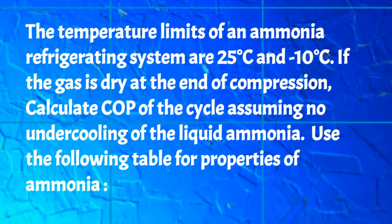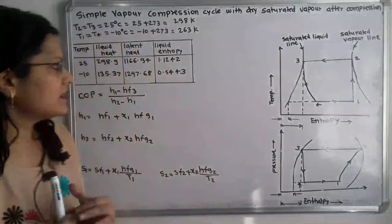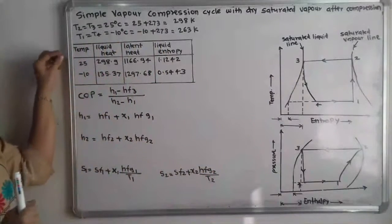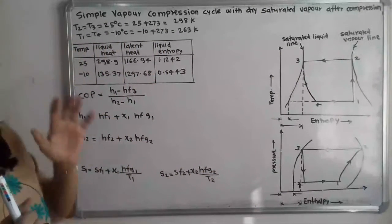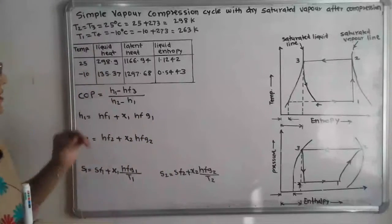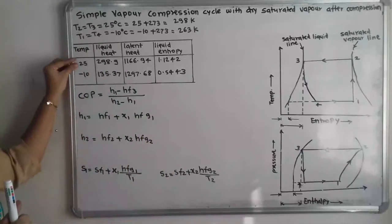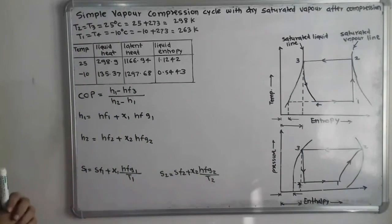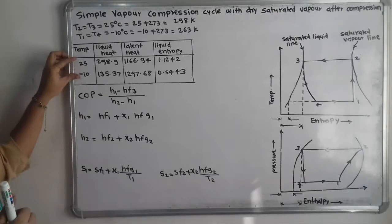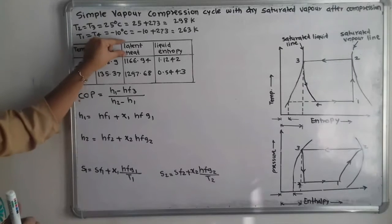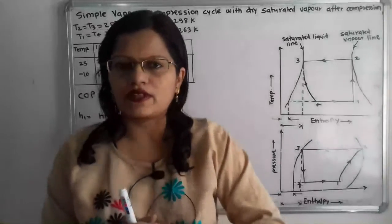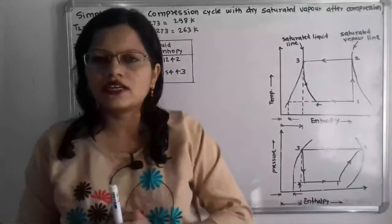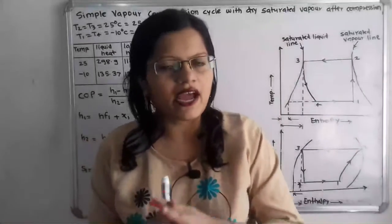A table is given for the properties of ammonia. The temperatures given correspond to the two limits: 25 degrees Celsius and minus 10 degrees Celsius. For each temperature, liquid heat, latent heat, and liquid entropy are provided.